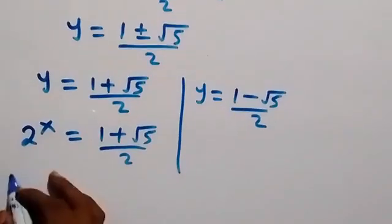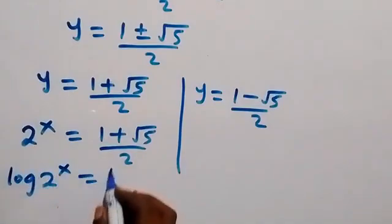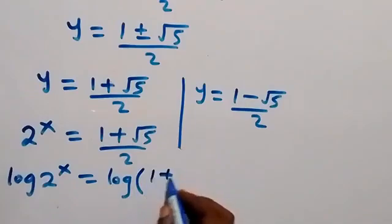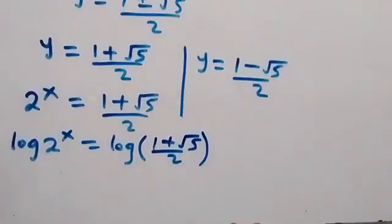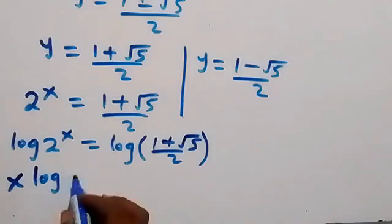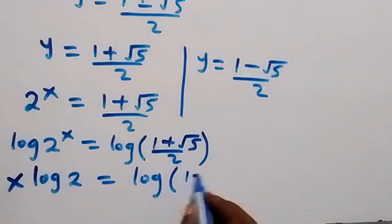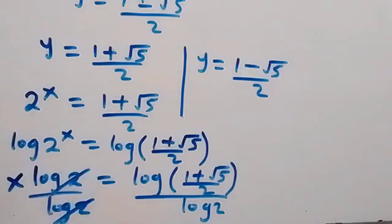Then we can take the log on both sides. We have log of 2 raised to power x equals to log of (1 plus root 5) over 2. When we apply the power law, x can be taken to the front, giving x log 2 equals to log of (1 plus root 5) over 2. Then we divide both sides by log 2, and log 2 cancels on the left side.